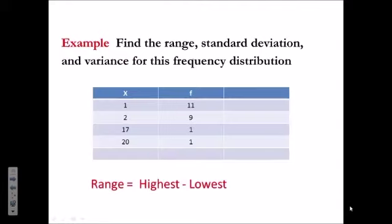Here's an example of a frequency distribution. The range is the first measure of variability, and the range is the highest score minus the lowest score. 20 minus 1 is 19. So 19 would be a measure of variability, and it's the range.